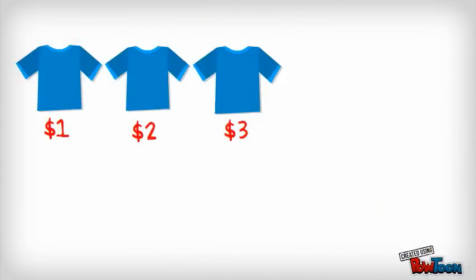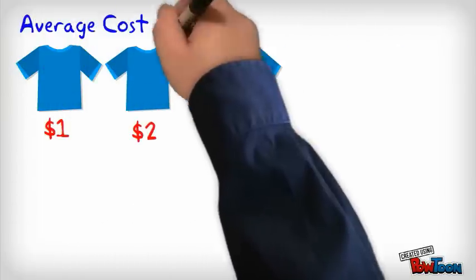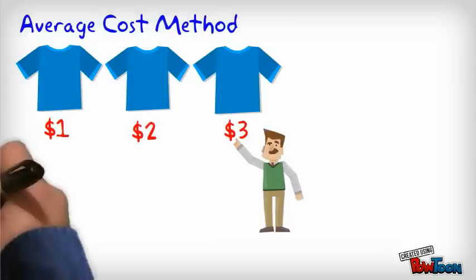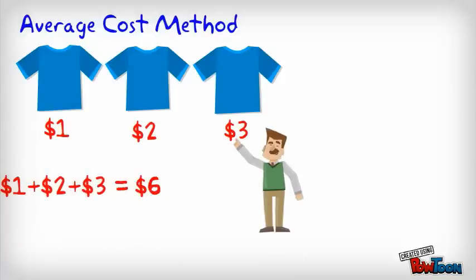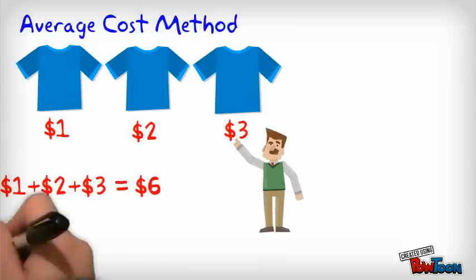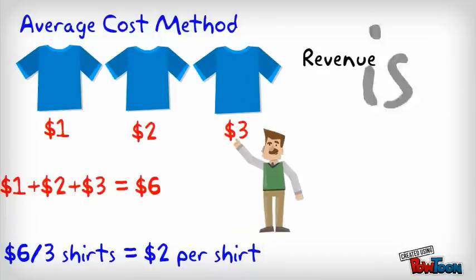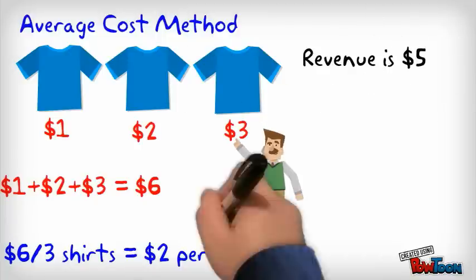Under the average cost method, we simply find the average cost per shirt. We do not care which t-shirt this guy picked. The average cost is calculated to be $2 per shirt, and that is our cost of goods sold. Therefore, the gross profit is $3.